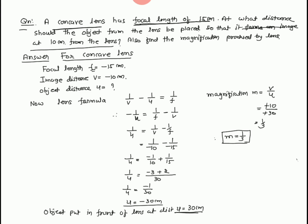Now we use the lens formula. For concave lens: focal length F equals minus 15 cm, image distance V equals minus 10 cm, object distance U is to be found. We know the lens formula: 1 upon V minus 1 upon U equals 1 upon F. Rearranging: 1 upon U equals 1 upon V minus 1 upon F. Placing the value: V equals minus 10 cm, F equals minus 15 cm. So 1 upon U equals 1 upon minus 10, minus 1 upon minus 15.